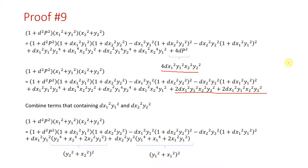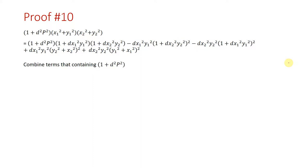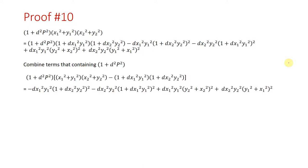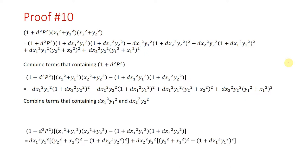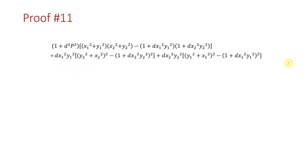Instead of four times dp, we replace it with two times dp plus two times dp. Combining terms containing d times x1 squared y1 squared and d times x2 squared y2 squared, these terms become squared values. Combining terms containing one plus d squared p squared, and again combining terms containing d times x1 squared y1 squared, we arrive at the final form of the equation. Let's consider the original Edwards curve equations and substitute x1, y1 and x2, y2.